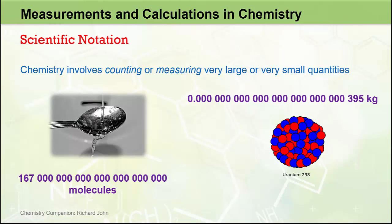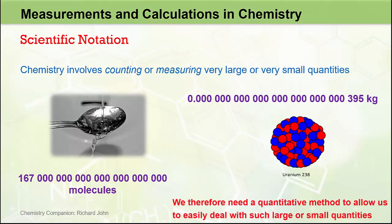The number of zeros in these two quantities is simply too great for us to deal with in any practical way, and there are too many zeros to get any real sense of the size of the quantity, whether it be large or small. So what we need is a system — a quantitative method — that allows us to deal with such large or small quantities.